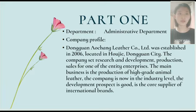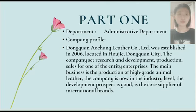Guangzhou Aochang Leather's company was established in 2009, located in Houjie, Dongguan City — the world shoe manufacturer base. The company integrates research and development, production, and sales. The main business is the production of high-grade animal leather. Products feature soft touch, brand color, natural texture, anti-abrasion, and other characteristics, widely used in shoes, handbags, and so on. At present, the company is at the middle level of the industry with good development prospects and is a core supplier of international brands.